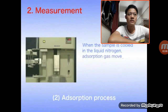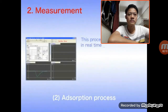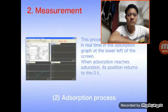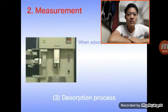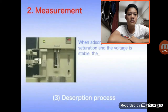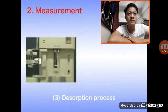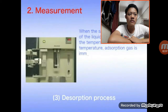This process will be displayed in the adsorption graph. The third process is a desorption process. The cell is lifted out of the dewar flask and exposed to the atmosphere. When the sample is taken out of the liquid nitrogen, the adsorbed gas is immediately released in desorption.